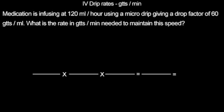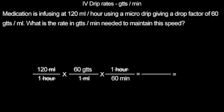When manually calculating an IV drip rate, you will have to calculate how many drops per minute are required. Medication is infusing at 120 milliliters per hour, using a micro drip, giving a drop factor of 60 drops per milliliter. What is the rate in drops per minute needed to maintain this speed? When setting up the equation, we start with our 120 milliliters per hour and our drop factor of 60 drops per milliliter. To get it into minutes, we multiply by 1 hour over 60 minutes. We cancel like terms and multiply across. We are left with 7,200 drops for 60 minutes. When you divide, you get 120 drops per minute.